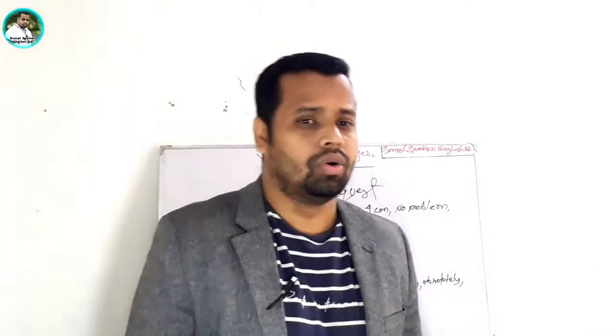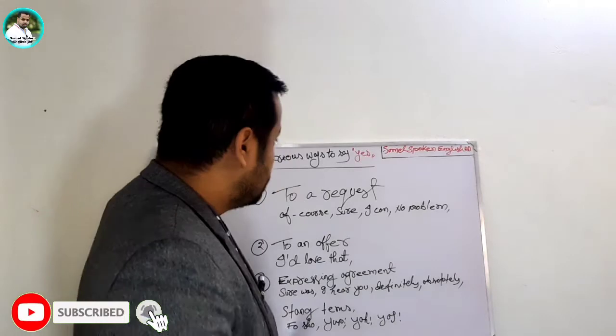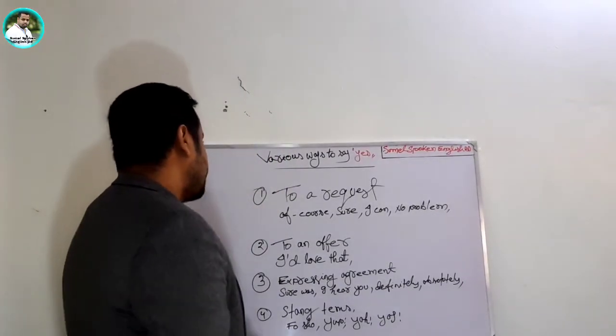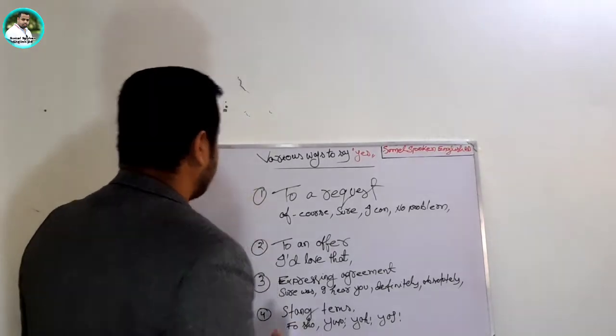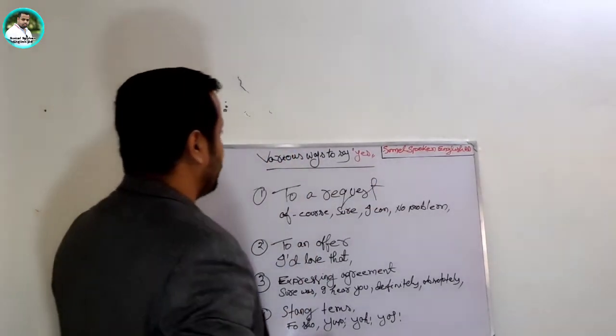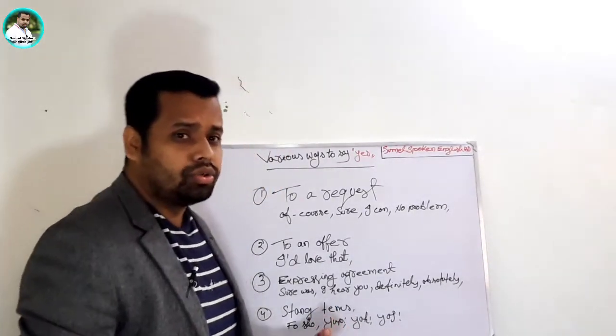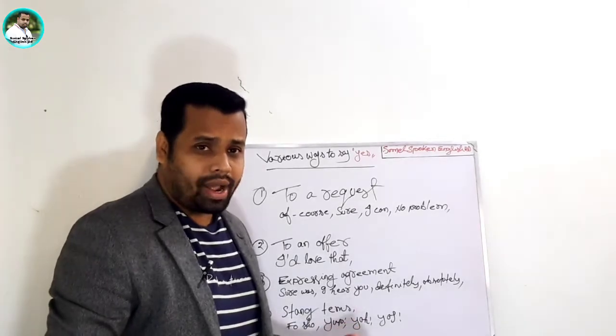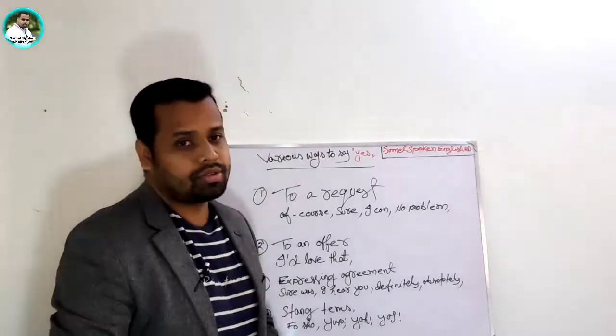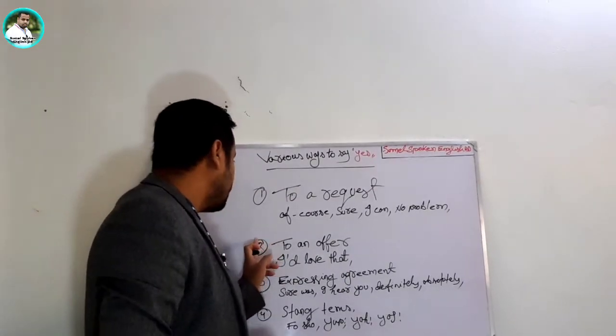So no more talking, let's have a look at what has been written on the board. First of all, we can see various ways to say yes. It means there are different ways we can say yes. And now we need to know when, where, and how we can use different words instead of yes.